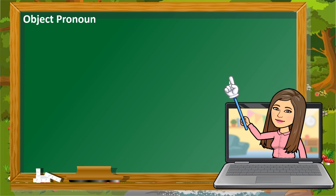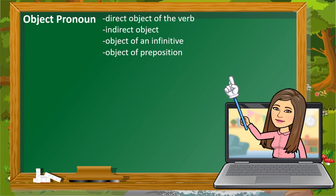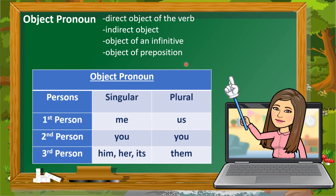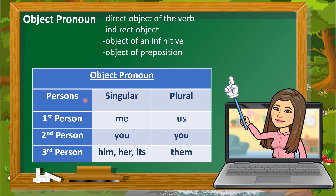Now for object pronouns. Object pronouns serve as the direct object of the verb, indirect object, object of an infinitive, and object of a preposition. The same process applies as with subject pronouns: identify the person, noun gender, and whether it is singular or plural.